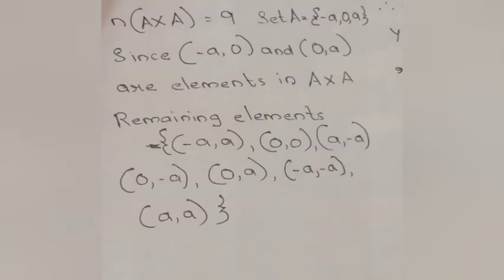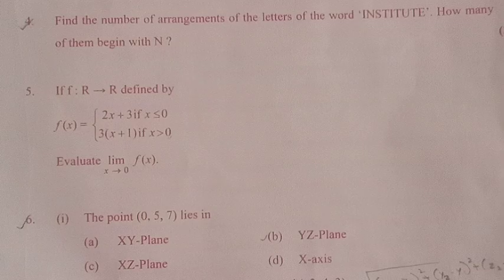Part 2. n(A×A) = 9. Set A = {-a, 0, a}. Since (-a, 0) and (0, a) are elements in A×A, the remaining elements of A×A can be determined from A = {-a, 0, a}.